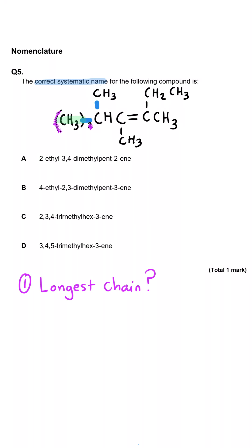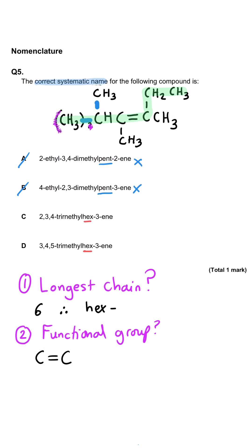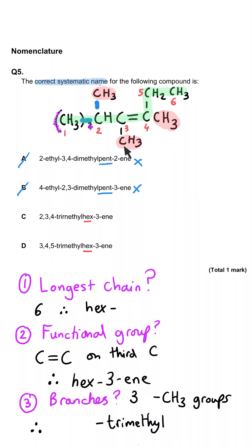If we start along the bottom with the CH3 group and go left to right, that's two, three, four — going straight along that would be a chain of five. However, when we go up and then along, we can see that we've actually got a continuous chain of six carbon atoms. That means this molecule is going to be 'hex-something,' and there's a double bond here so it's going to be hexene. Numbering gives us hex-3-ene. We can also see three methyl groups, so this is going to be trimethylhex-3-ene. Numbering from the left keeps numbers smallest, so the full name is 2,3,4-trimethylhex-3-ene — C is the correct answer.